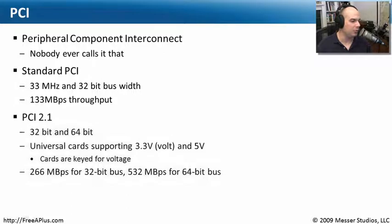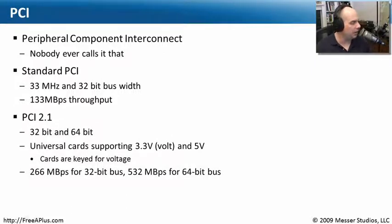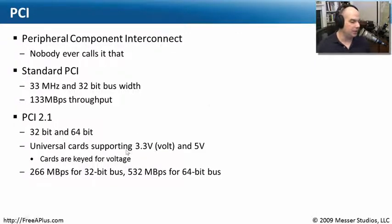We got a certain amount of throughput through there, but it wasn't enough. So we came out with a new standard called PCI 2.1 that had a 32-bit bus and a 64-bit bus, giving us a much bigger bus. Notice that it used different cards with different voltages — a different amount of power that was required.